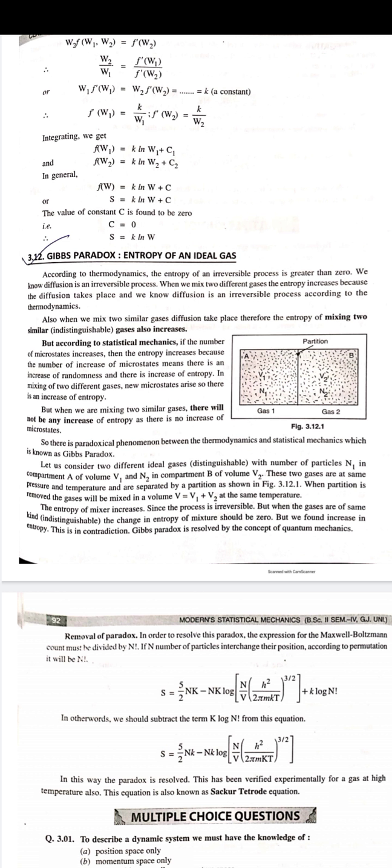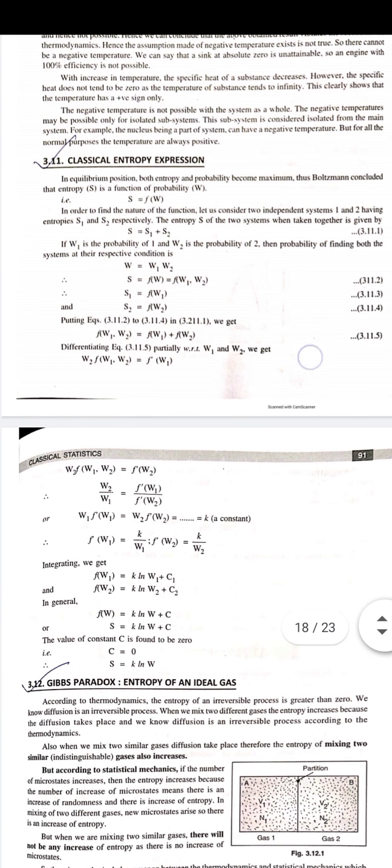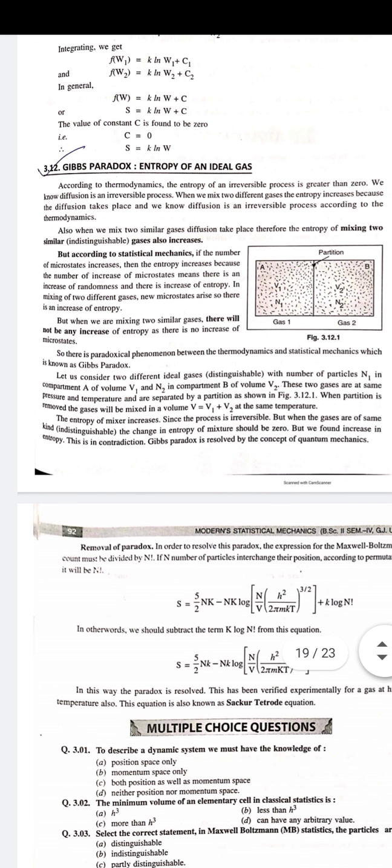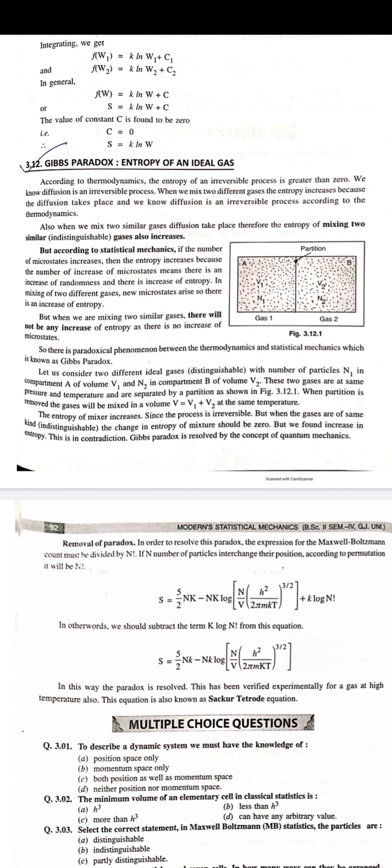So the general expression is F of W equals k ln W plus C. This is the general expression for any number of independent systems. Since F of W represents S, we have S equals k ln W plus C. The value of C is found to be zero, so the classical entropy expression is S equals k ln W.